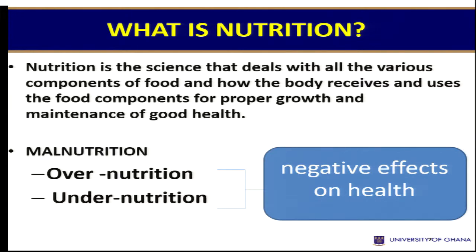When we talk of malnutrition, there are two sides to it. Overnutrition means that we are eating the food in excess. And when we talk of undernutrition, it means we are not getting enough of the nutrients. So be it over or under, both of them have a negative impact on our health. So we need to understand that if we eat too much or too little, we have consequences. We have to eat in moderation — that's what the body needs.